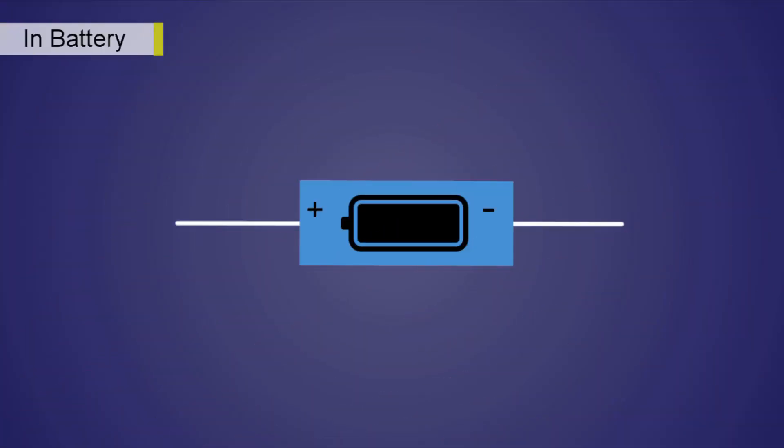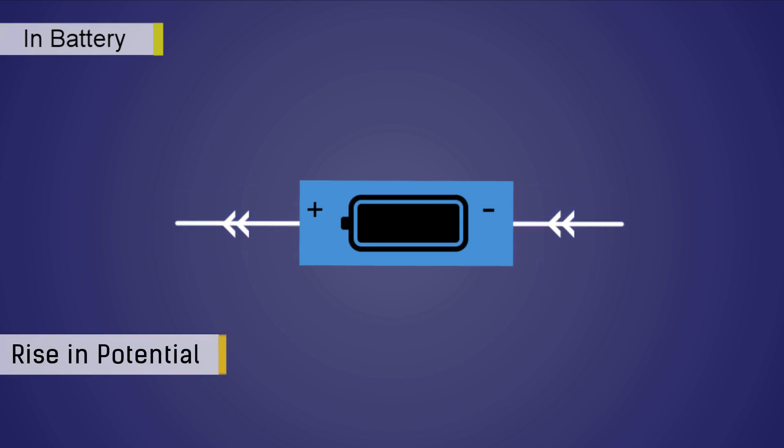Similarly in batteries the polarity is fixed irrespective of the direction of current. If we start from the negative end of the battery towards the positive end there is a rise in potential and the voltage value should be considered as positive.